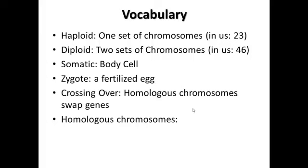First, we'll touch on vocabulary a little bit. I know you've heard these words before, but I hope by now you'll understand what they mean. Haploid and diploid are two related words. Diploid means two — two sets of chromosomes. Haploid means within some cell or some organism, there is only one set of chromosomes — a full set of chromosomes.